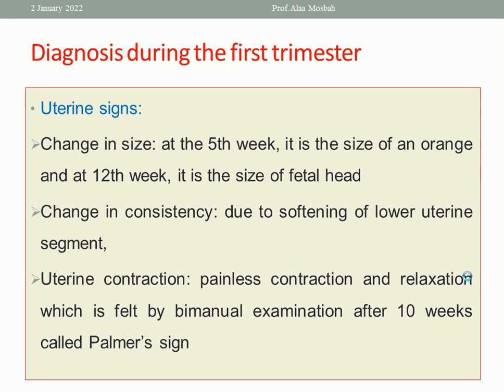What about uterine signs? The size of the uterus enlarges. At the fifth week, it is the size of an orange. At 12 weeks of pregnancy, it is the size of a fetal head. There is also a change in consistency of the uterus — it becomes more soft. There are uterine contractions which are painless, felt during bimanual examination. After 10 weeks of gestational age, this contraction and relaxation during bimanual examination is called Braxton Hicks contractions — or the Braun von Fernwald sign.